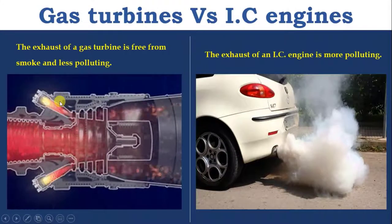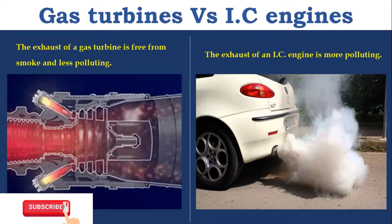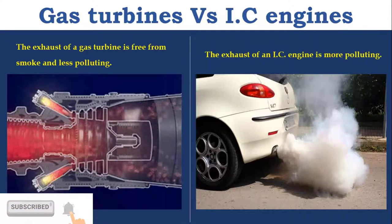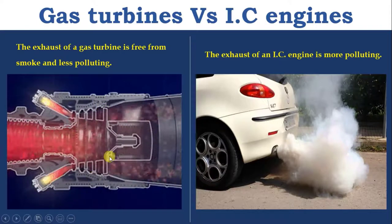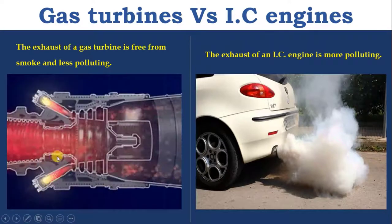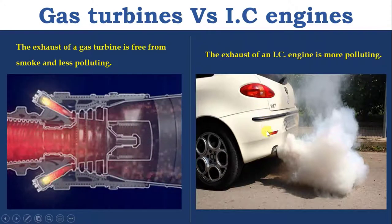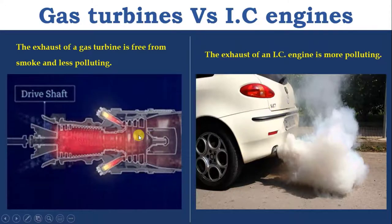Exhaust of a gas turbine is free from smoke and less polluting, whereas the exhaust of an IC engine is more polluting. This is because of the quality of fuel used in gas turbine — gas turbines use high-quality fuel and complete combustion takes place. Whereas in IC engine, due to valve operation and scavenging, exhaust pollution is more, and the quality of fuel is also less compared to gas turbine engines.